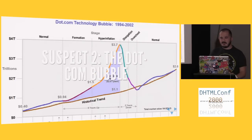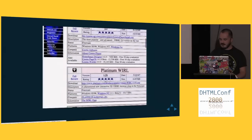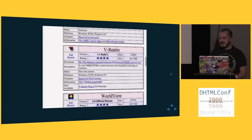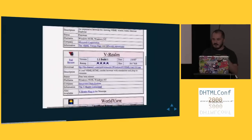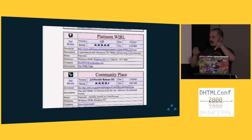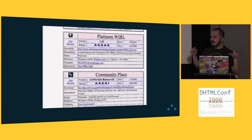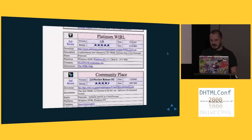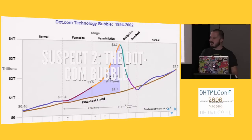Another problem was the dot-com bubble. Remember when I said there were all these VRML browser guys, like a million things? They all bought each other. All of these bought each other and bought their developers and bought each other out. And then eventually, Computer Associates came in and bought the final one and just said, 'We're done - no more VRML.' Suddenly, there wasn't a market.